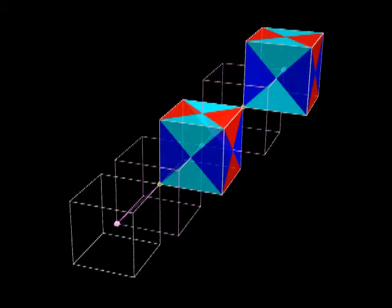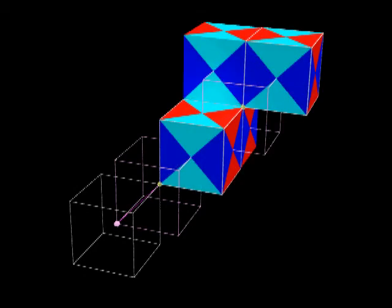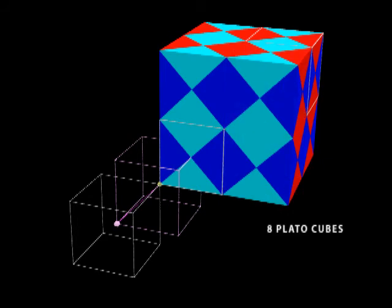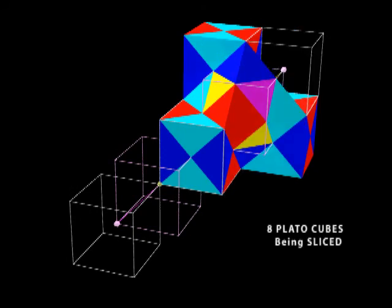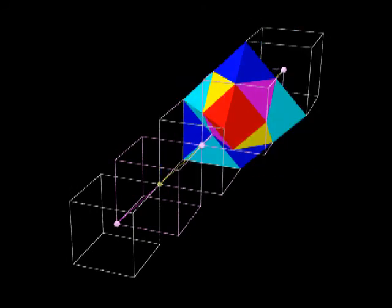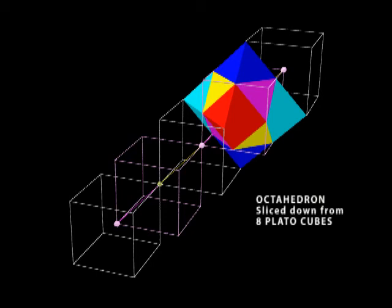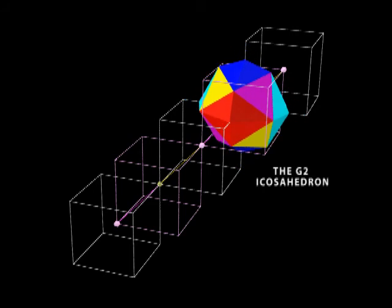Let's bring those two cubes back. And then we'll add another six cubes. And make it an eight cube set of Plato cubes. Now we'll start slicing down all these cubes to see what we've got. And look, now we have a beautiful octahedron. And it's going to change into a perfect generation two icosahedron.